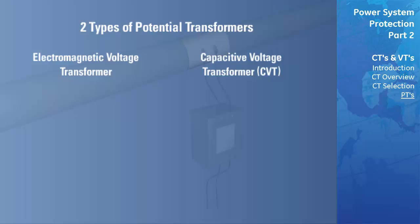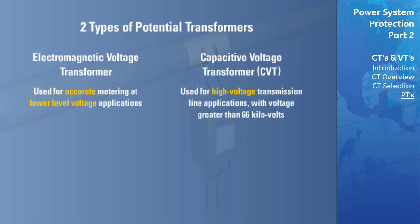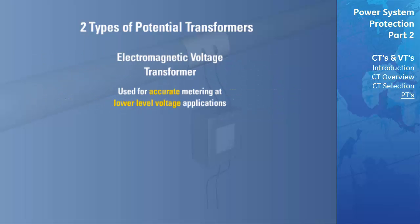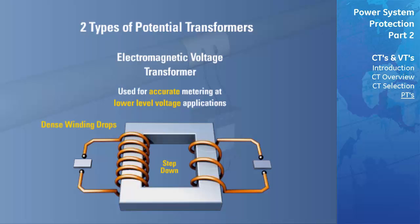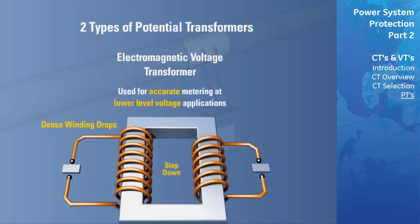Electromagnetic voltage transformers are usually used when accurate metering needs to be performed for lower voltage applications. Capacitive voltage transformers are commonly used in high voltage transmission line applications where the voltage is higher than 66 kilovolts. Electromagnetic voltage transformers have dense winding designs to accurately scale down the voltage and ensure the ratio is consistent for all variations in the input voltage. Due to the small amount of voltage drops per winding, electromagnetic voltage transformers will increase in size as the rated primary voltage increases. Likewise, the cost of electromagnetic voltage transformers tends to increase at a disproportionate rate to the primary voltage rating.